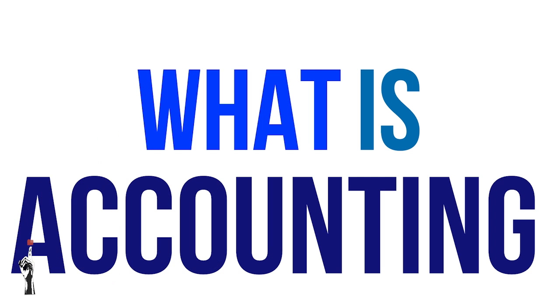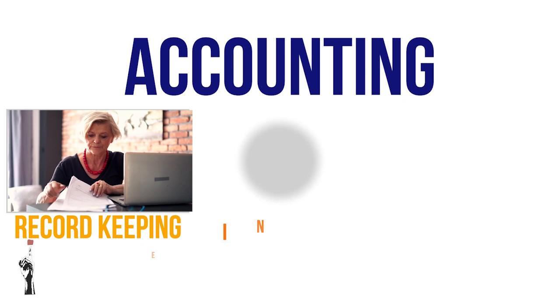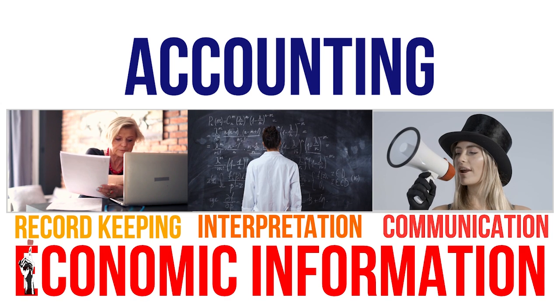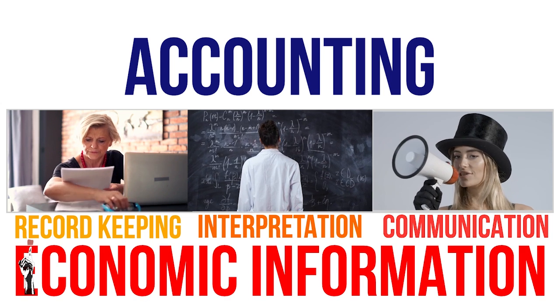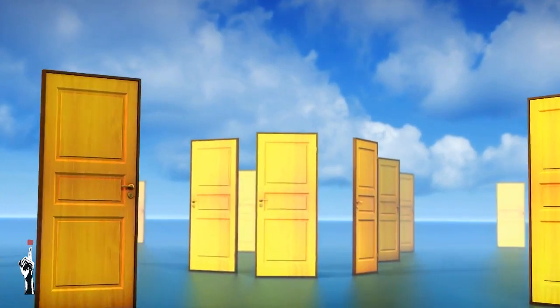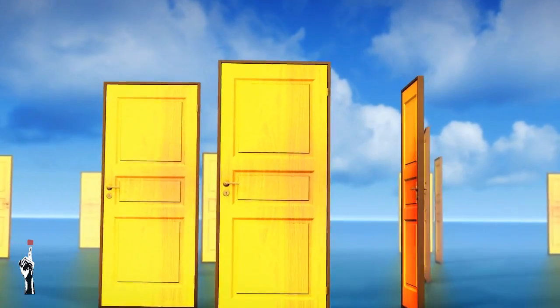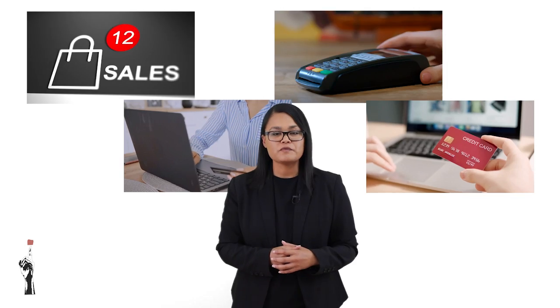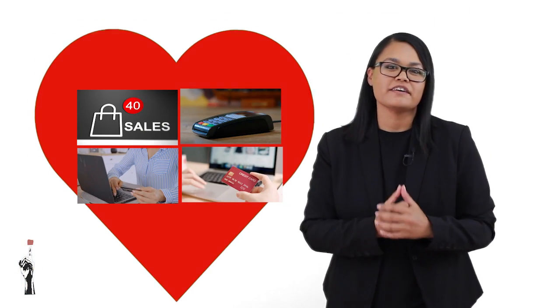Before we can understand all the different accounting concepts we have to understand what the word accounting means. Accounting is the process of record-keeping, interpretation and then communication of economic information. This overview helps businesses make better decisions, and more specifically make better financial decisions. Basically, accounting has to do with all the components of the business where money is involved. This financial information is very important and that is why a record of it should always be kept — the record-keeping of this is at the heart of accounting.